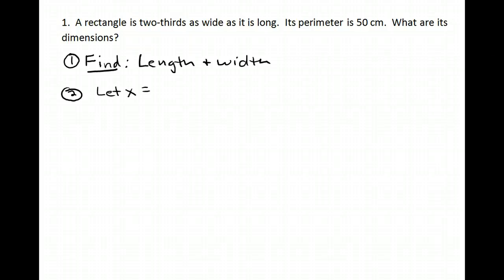In this video we're going to look at geometry word problems. These are the three problems that were on the handout given in class. Number one: a rectangle is two-thirds as wide as it is long. Its perimeter is 50 centimeters. What are its dimensions?